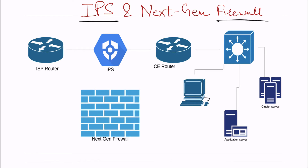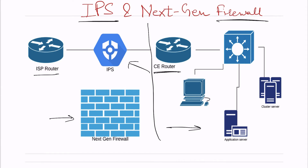In the diagram you can see that I have deployed one IPS, and this is the next generation firewall I want to talk about. This is the diagram of a small office. This is the customer edge router — my office is on the right side, and this router at my office is known as the customer edge. This is the ISP where my leased line is connected.